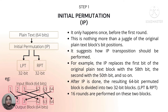There are predetermined criteria for which bit positions are transposed. For example, the IP replaces the first bit of the original plaintext block with the 58th bit, the second with the 50th bit, and so on. Once the process is done, the 64-bit block is divided into two blocks: LPT (left plaintext) and RPT (right plaintext), each of them being 32-bit blocks.